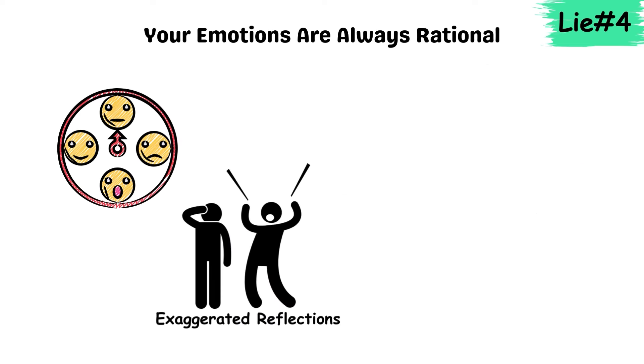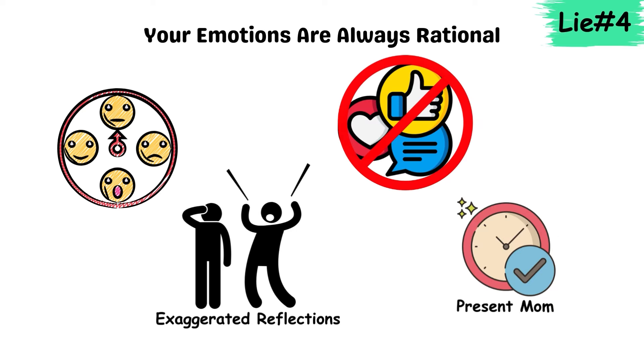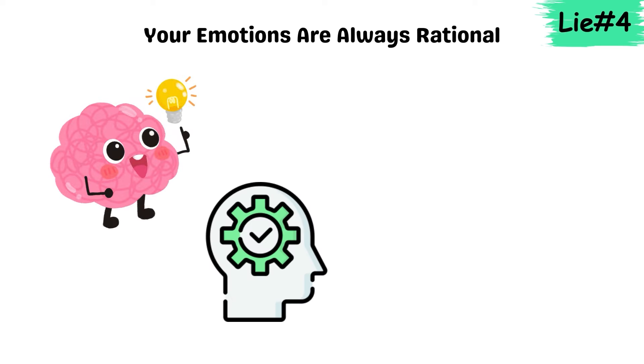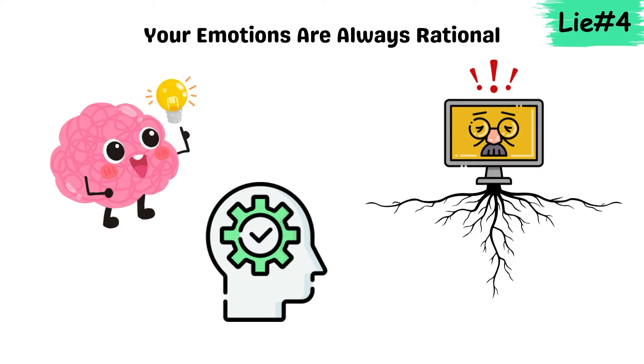Emotional responses are often exaggerated reflections of past events, causing reactions that don't always match the present moment. Your brain tells you these feelings are rational, but in many cases, they're rooted in outdated information.